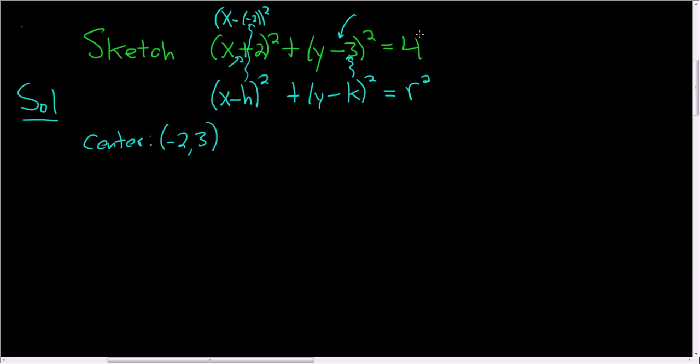The radius is the square root of this number, right, because r² equals 4. So you take the square root to find the radius r. So r is 2, that's the square root of 4.